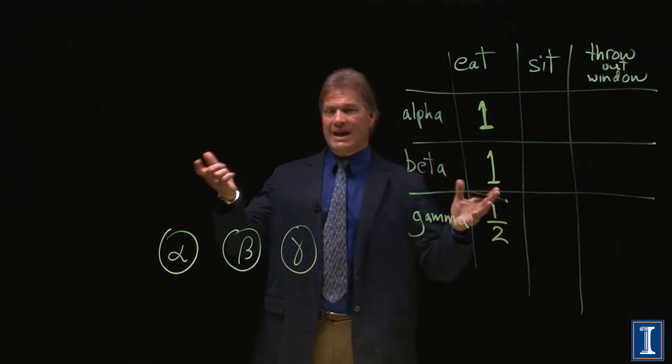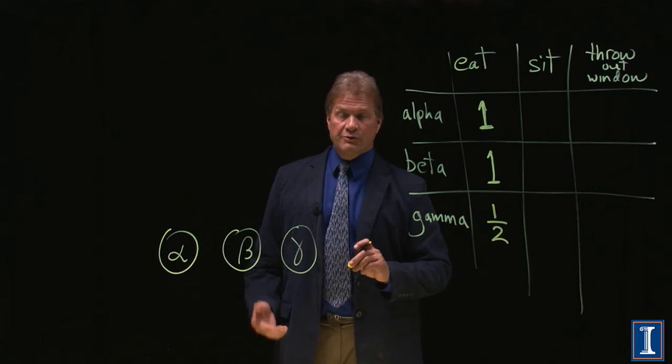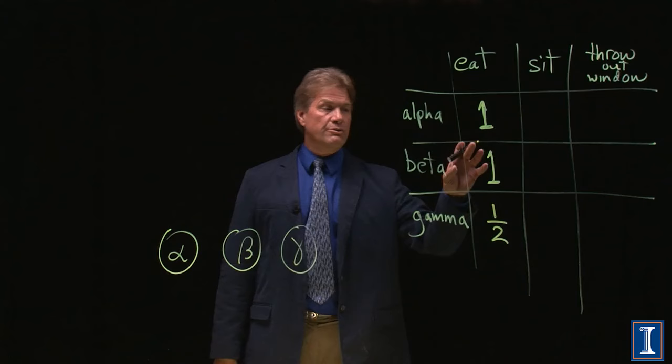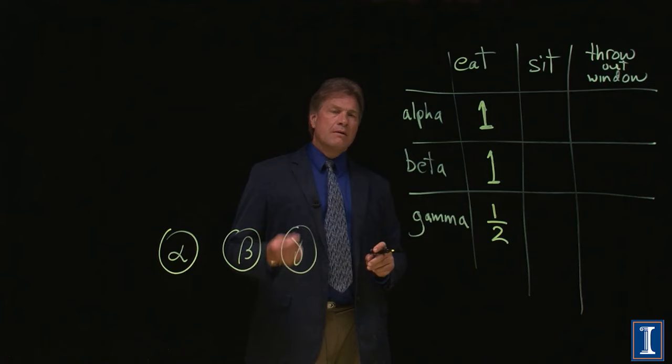So if you eat the gamma emitter, some fraction, I don't know if it's exactly a half, but something less than one, some of those gamma rays go right through your body and hit your neighbor, not yourself. So if you eat the gamma source, you're not going to absorb all the energy like you do if you ate the beta or the alpha.